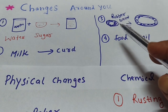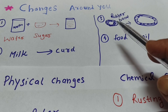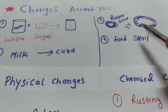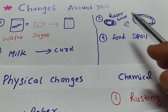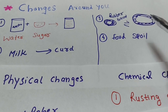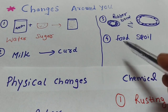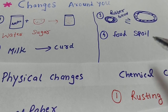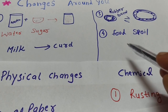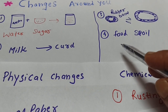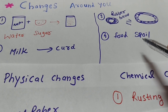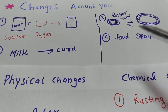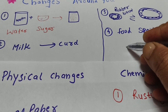Similarly, if we have a rubber band, we can stretch it and then it comes back to its original shape — that is a physical change. But if we eat food, it will not go back to its original form — that is a chemical change.